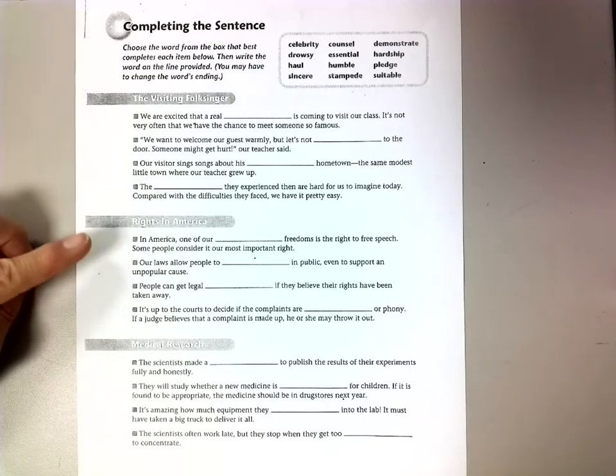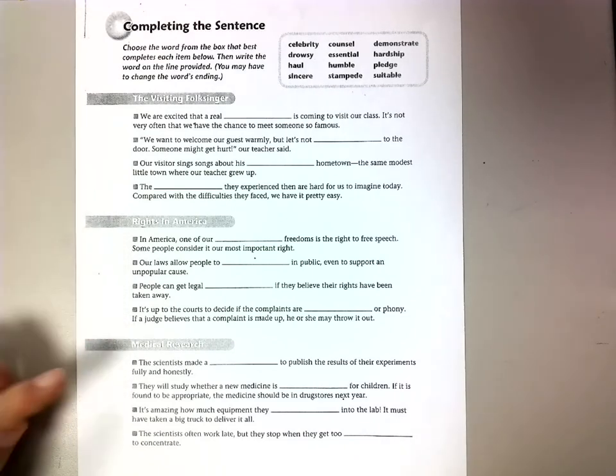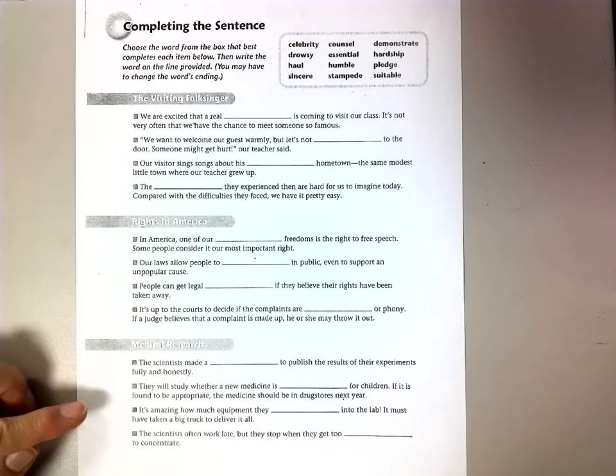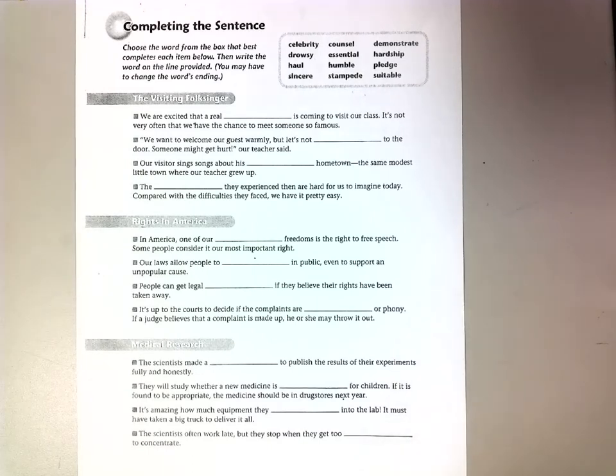The next one is called Rights in America. So some of your rights in America, one of your rights is the right to come to school. So that's what that paragraph is going to be about. And the third paragraph is about medical research. So that would be something that has to do with researching something, maybe people that are researching COVID at this time. So we're going to come back up to the beginning and we're going to start with our very first sentence.